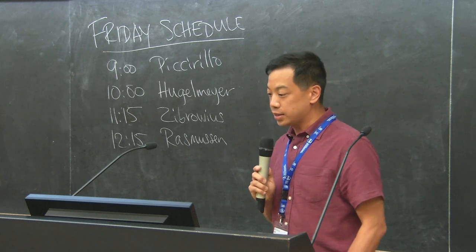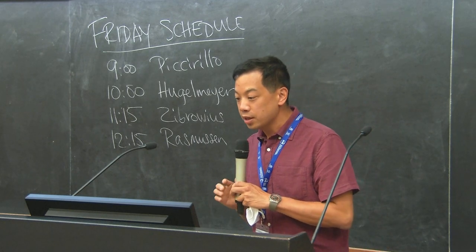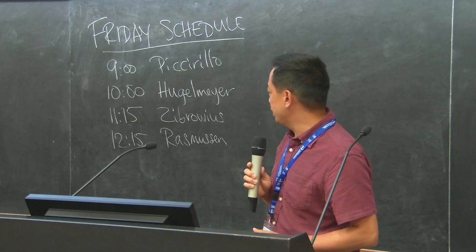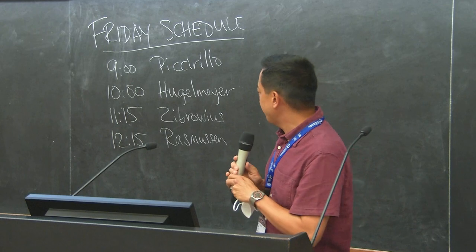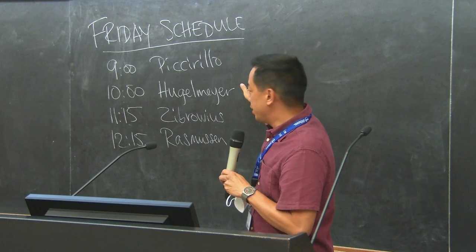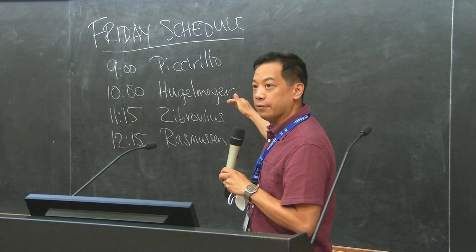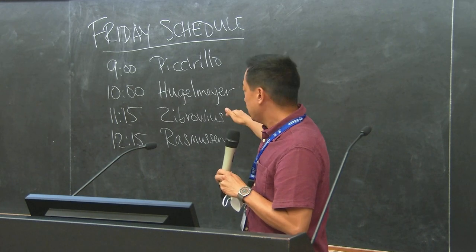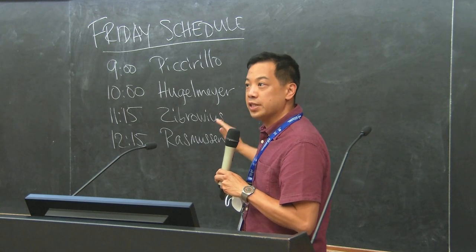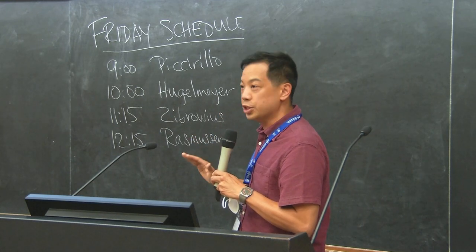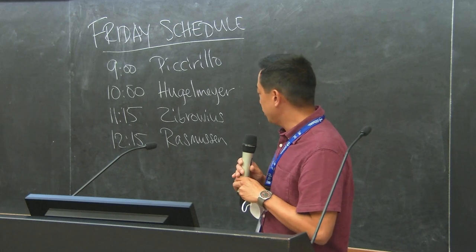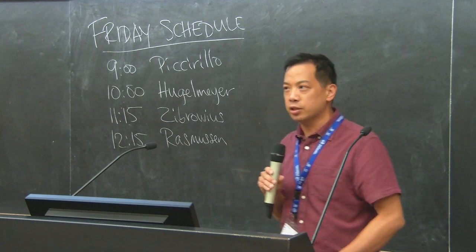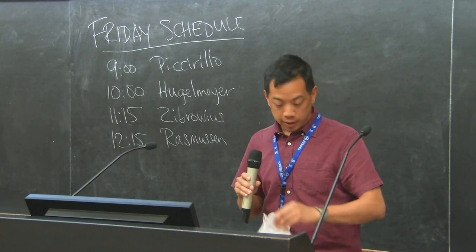The next thing is a reminder that our schedule tomorrow has changed a bit. So here it is on the chalkboard here. The first two have not changed, but there's a coffee break after Cole, then the coffee break will only be 30 minutes instead of 45 minutes, and then we'll have Claudius at 11.15, and then 15-minute break, and then Jake at 12.15, and that will be it, and then there will be lunch afterwards. So hopefully everybody will be able to get lunch. I think lunch closes at 1.45, so we should be fine.